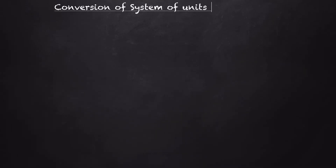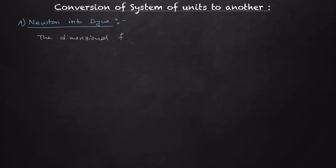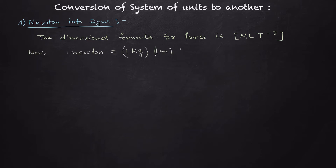Now let's convert Newton into dyne. So this is our first conversion. For this, we are going to use the dimensional formula for force. Newton is the unit of force in SI unit and dyne is the unit in CGS. The dimensional formula for force is MLT to the power minus two. So we can write that one Newton equals one kg × one meter × one second to the power minus two.